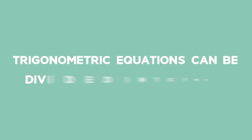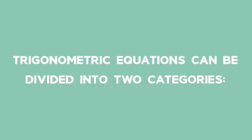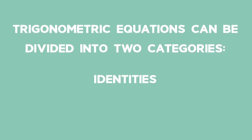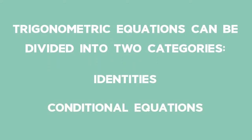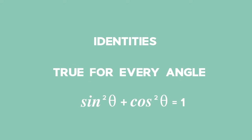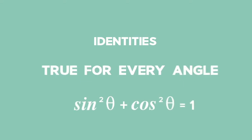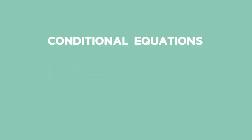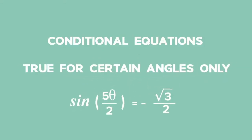Trigonometric equations can be divided into two categories: identities and conditional equations. Identities are true for every angle, but conditional equations are true for certain angles only.